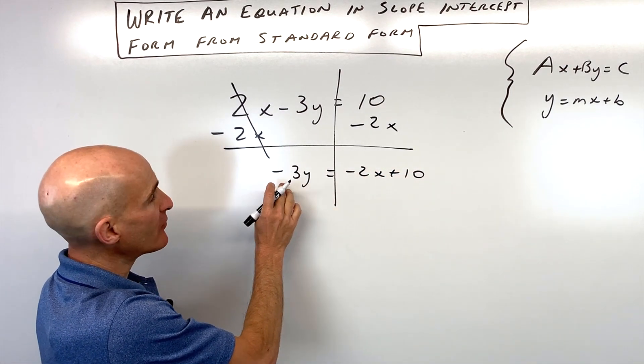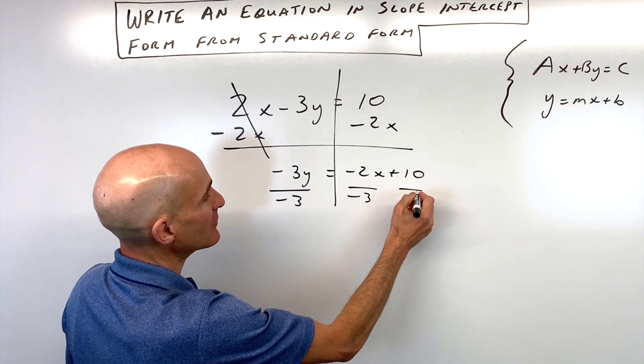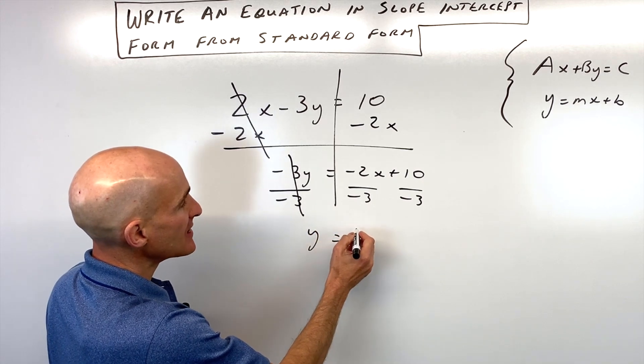We want to get the y by itself. The opposite of multiplying by negative 3 is to divide everything by negative 3, left and right sides to keep it balanced. Those are going to cancel. Now we have the y by itself.